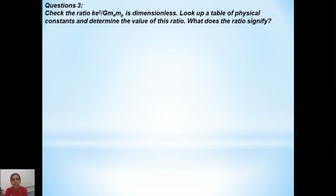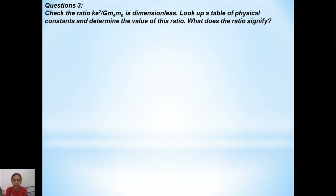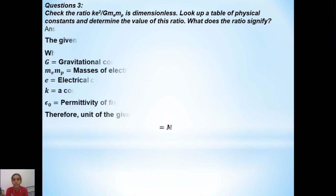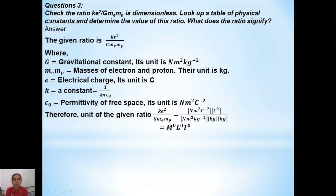The first part asks us to verify whether the given ratio is a dimensionless quantity. We have already learned how to find dimensional formulas in the first chapter. We use the same technique here to verify whether the given ratio ke squared over G m_e m_p is dimensionless.